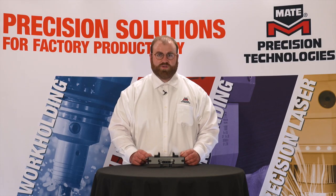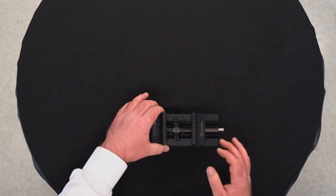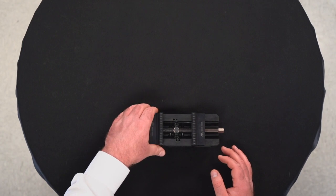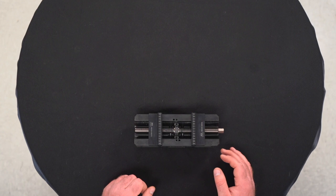All dyno grip vices also feature quick change jaws. Simply push in to remove your jaw, slide your jaw on, push down with a click to reinstall your jaw.